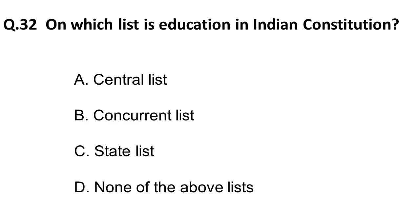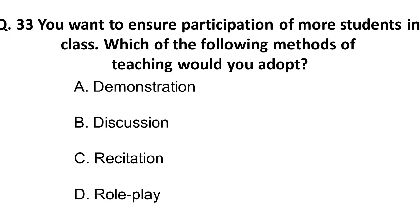Question: On which list is education placed in the Indian Constitution? There are three lists: the central list (dealt exclusively by the center), the state list (exclusively by the state), and the concurrent list (both state and center with the center having an upper hand). Education is placed in the concurrent list — this is a memory-based question.